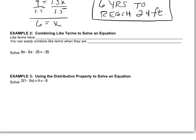In this next example, we're going to be combining like terms to solve an equation. Like terms have the exact same variable endings. So if I have 5X, a like term would be 10X, because they both end in X. If I have 2Y's and 3Y's, those are like terms. However, 5X and 2Y don't have the same variable ending, so they would not be like terms. Like terms must have the exact same variable endings.